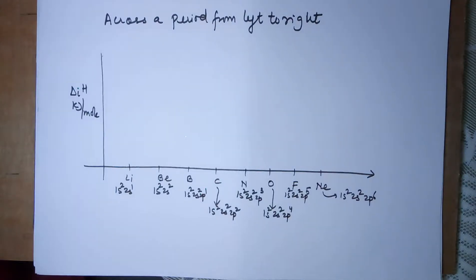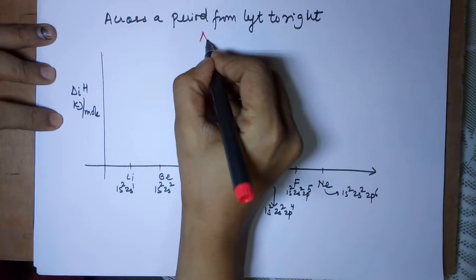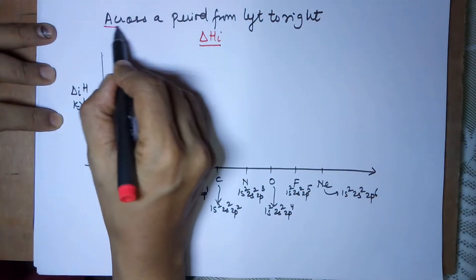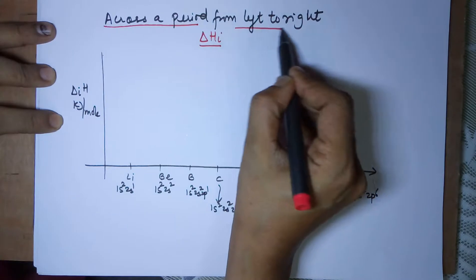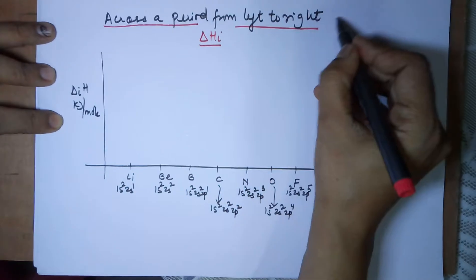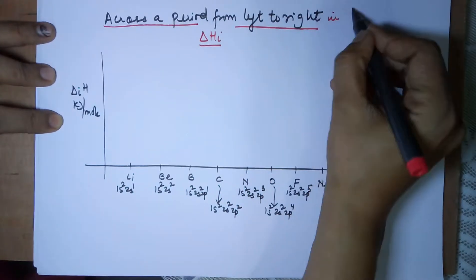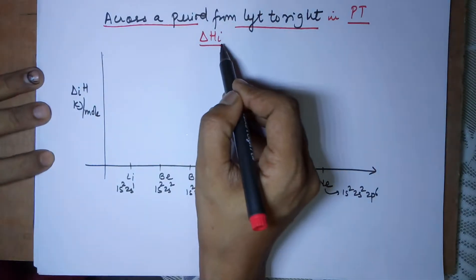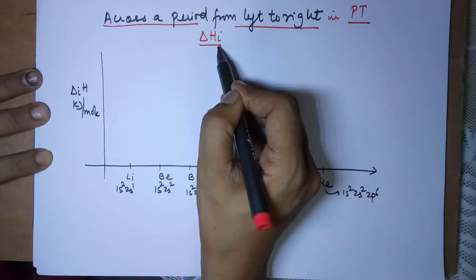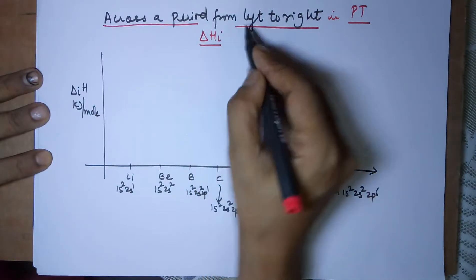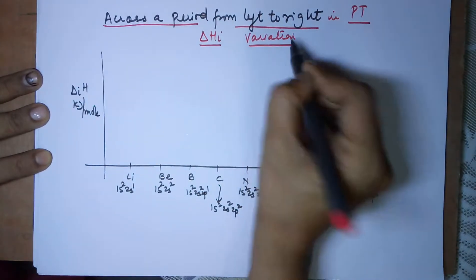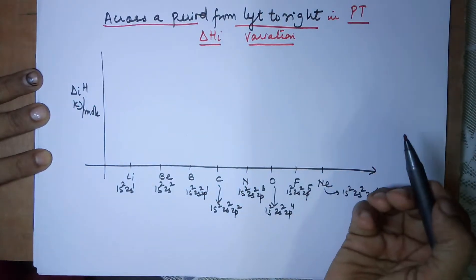Good morning students. In today's class I'll be talking about ionization energy variation on moving across a period from left to right in the periodic table. In the last class I talked about ionization energy; in this class we are talking about variation in a period.